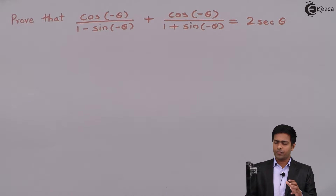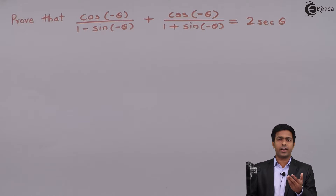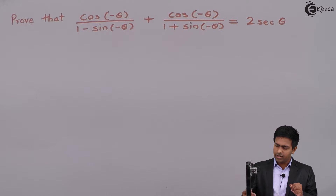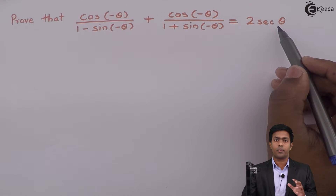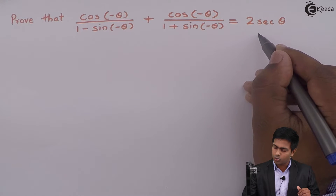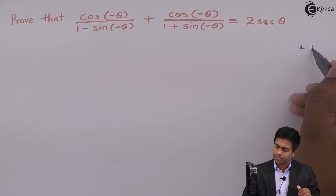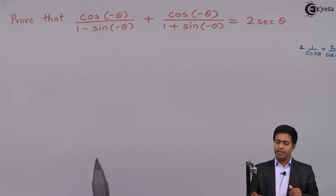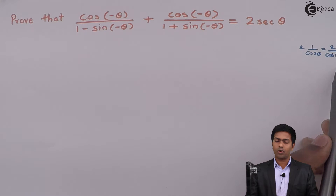How do we get the value? First of all, let us visualize the right hand side in terms of the same trigonometric ratios present on the left hand side — that is, sin and cos. So I will visualize the right hand side in terms of sin and cos. Sec θ is nothing but 1/cos θ, so on the right hand side we want 2 × (1/cos θ), which is 2/cos θ. So we have to prove the left hand side equals 2/cos θ.